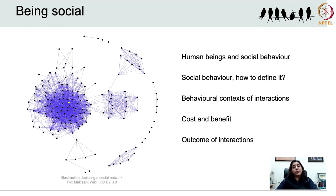The question arises: what do we mean by being social? Social groups can be defined as aggregations of individuals in order to derive some benefit through social behaviour exhibited by group members. It broadly refers to interactions between members of a group in a manner that the actions of one individual affect another individual but also the actor itself. The behavioural context in which such interactions occur could be affiliative or agonistic, and to understand social behaviour we need to understand how these groups are formed, the dynamics of interactions within a group, and the costs and benefits of group membership.